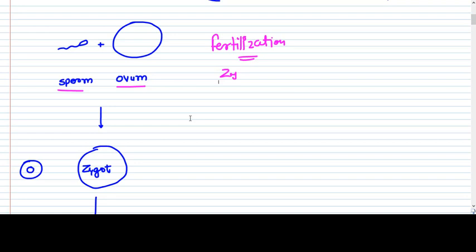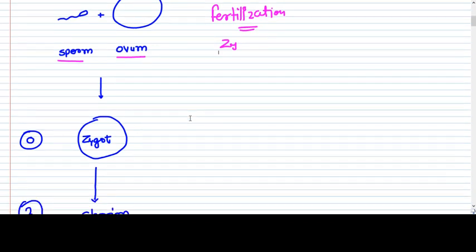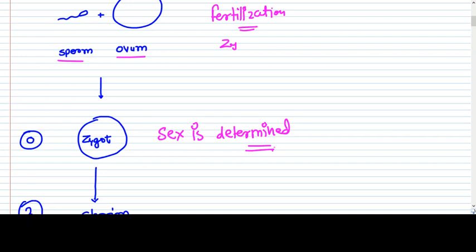The moment when the zygote is formed in reality, the sex is determined. Whenever the sperm and ovum get fusion, fertilization happens, and the zygote is formed — at that very moment, the sex is determined, whether it is going to be male or female. And it is not going to change in future. This is the first concept you should understand.